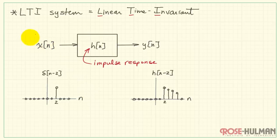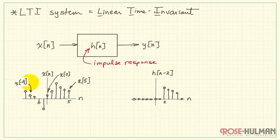Now let's think about a generic input x of n. I'll draw a typical sequence. Here at n equals zero, we would have the value x of zero. And for example, here at n equals 5, we would have the value x of 5. Back here at n is minus 4, we would have x of minus 4.